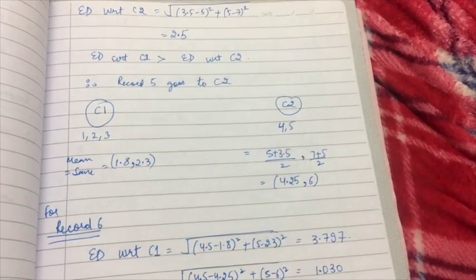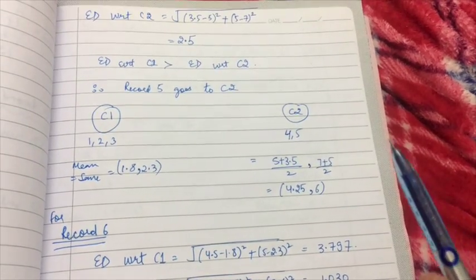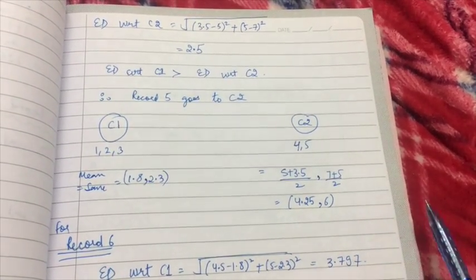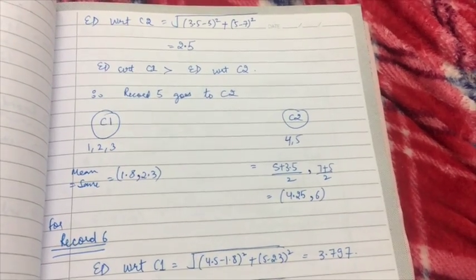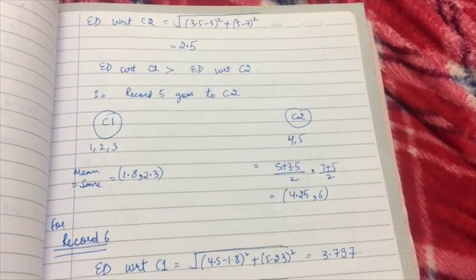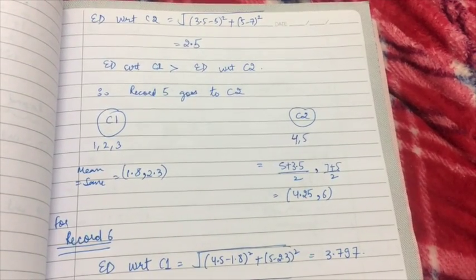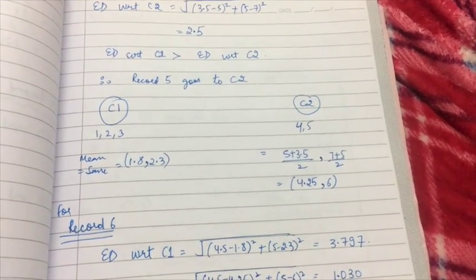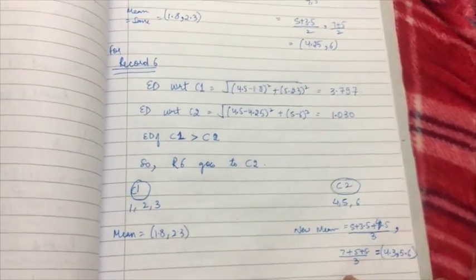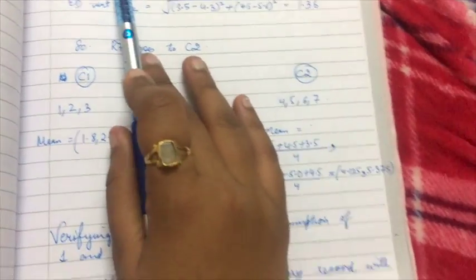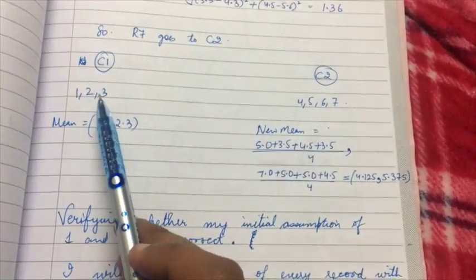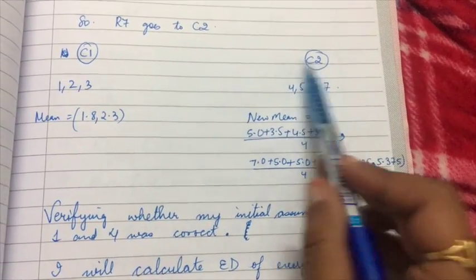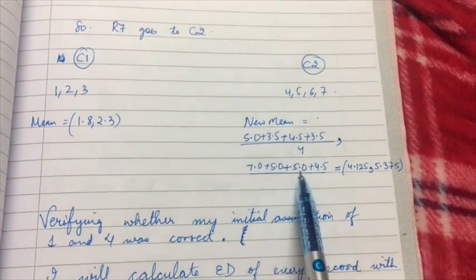You can pause the video right now and practice the question on your own, since all the calculations are in front of you and are very similar to the ones already explained — only the values differ. Similarly, we go on for records six and seven. In the end, cluster one contains items one, two, and three, while cluster two contains items four, five, six, and seven.